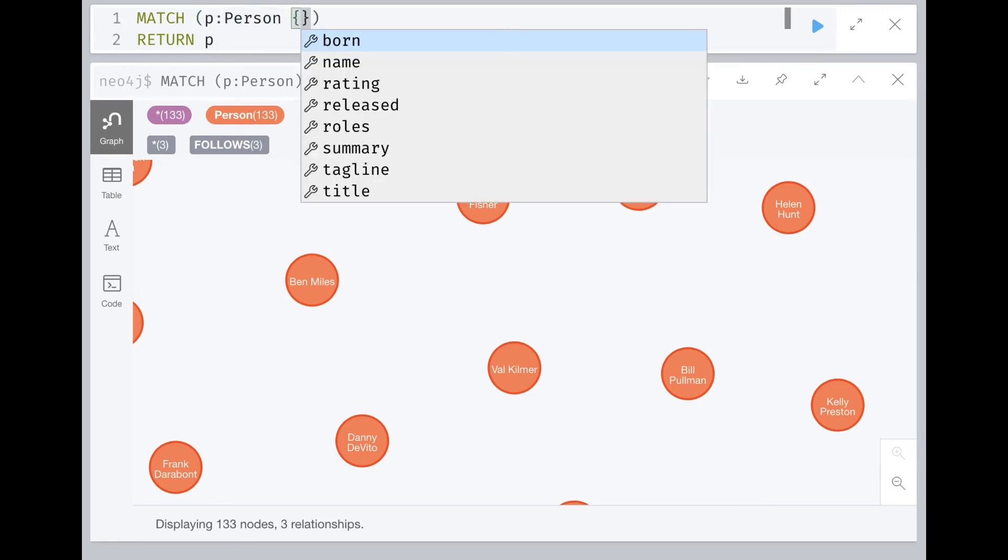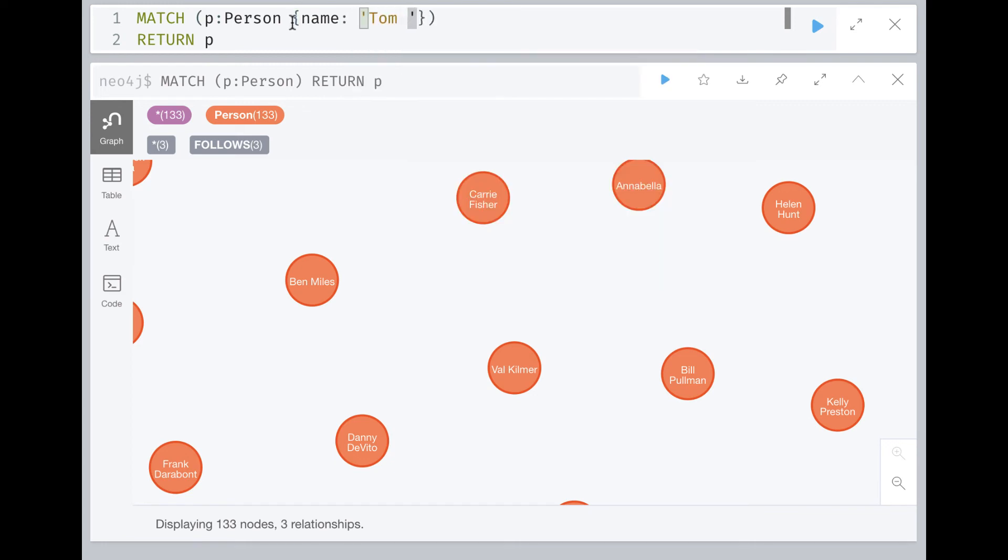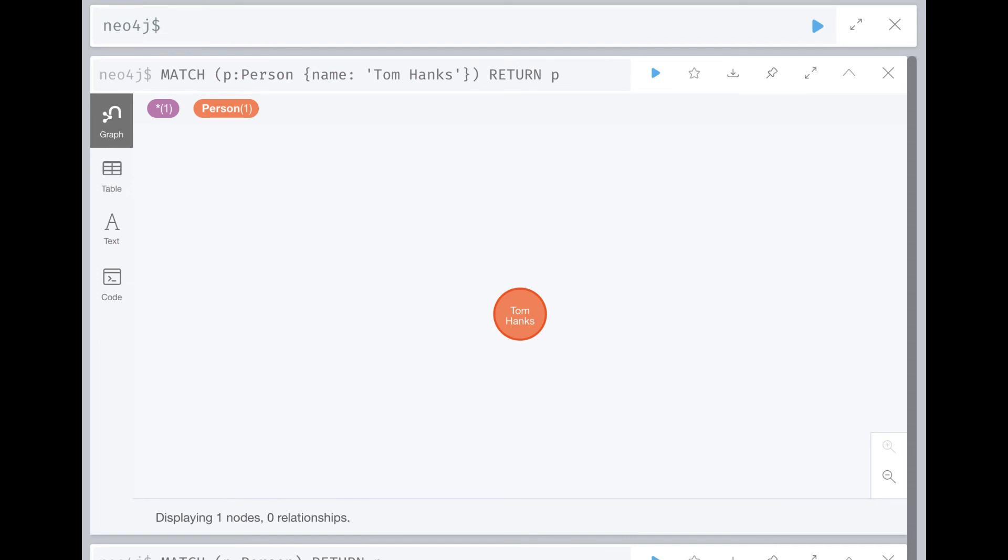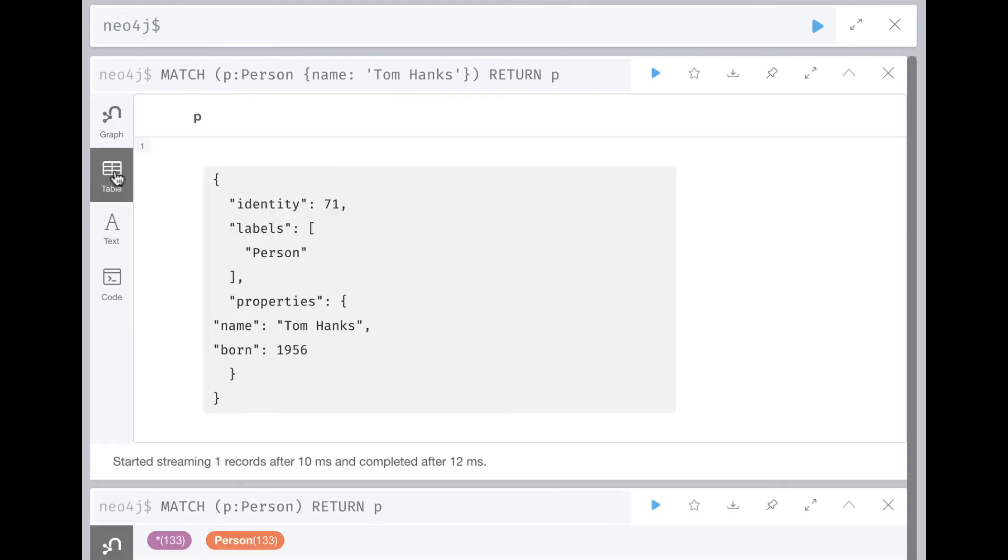If we want to filter what person nodes to retrieve and return, we can specify a property value. In Neo4j browser, we can view the node returned as a graph, or we can view the properties of the node in table view.